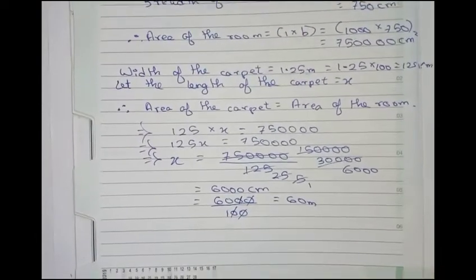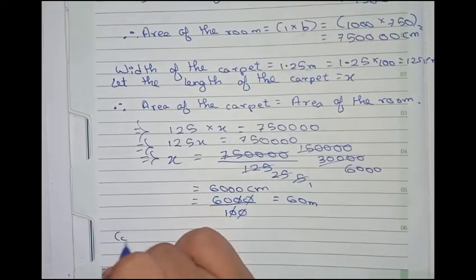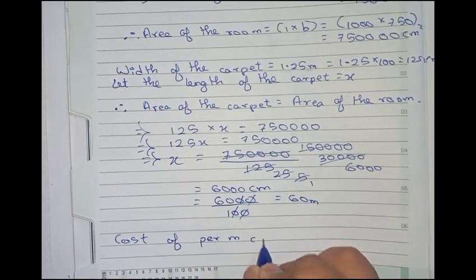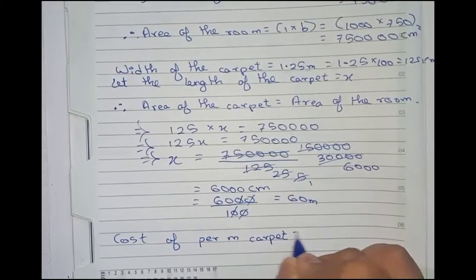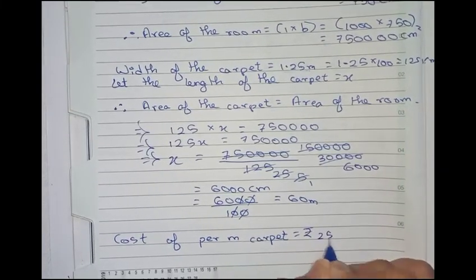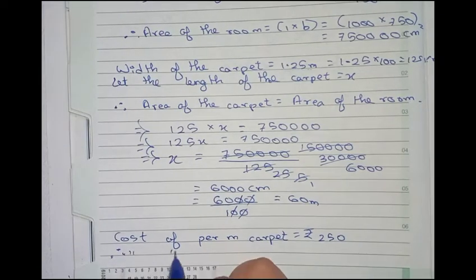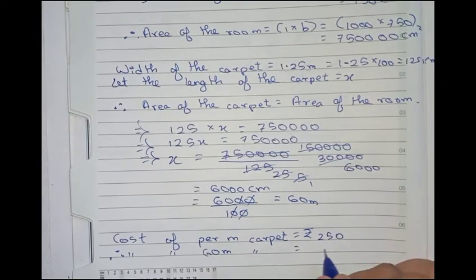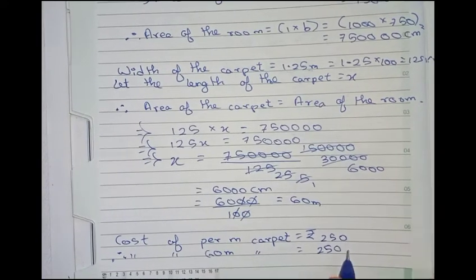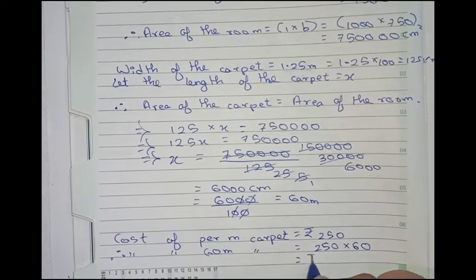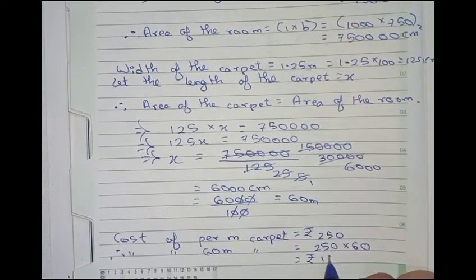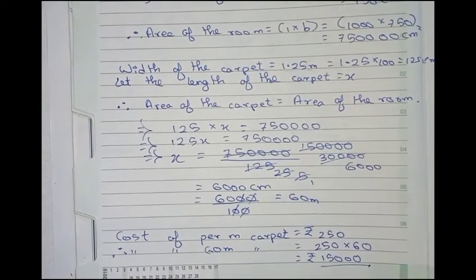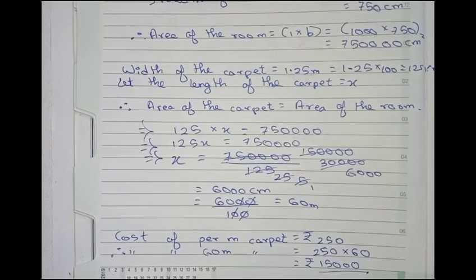Now we will find the cost. Cost of per meter carpet is equal to 250. Therefore cost of 60 meter carpet, that will be equal to 250 into 60. It is equal to rupees 15,000. So 15,000 is the final answer for this question.